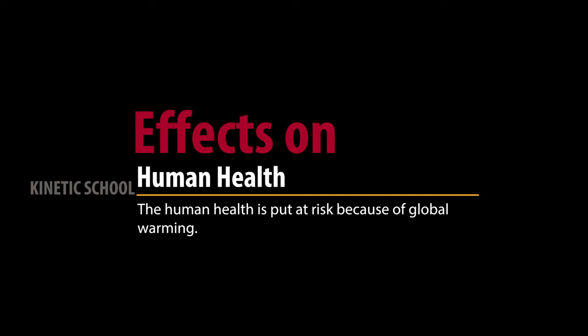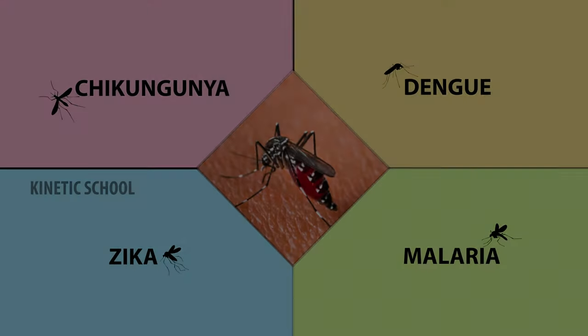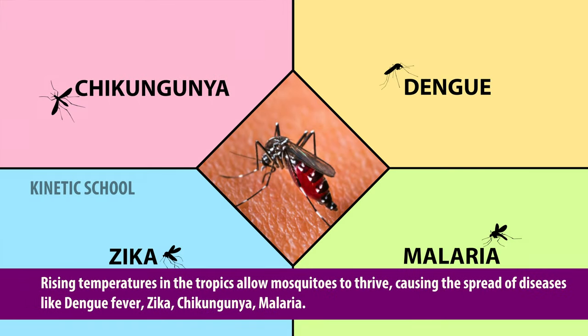Effects on human health. Human health is put at risk because of global warming. Rising temperatures in the tropics allow mosquitoes to thrive, causing the spread of diseases like dengue fever, Zika, chikungunya, and malaria.